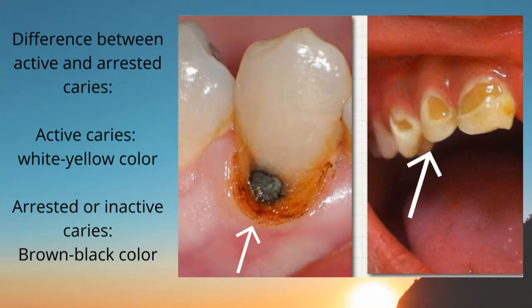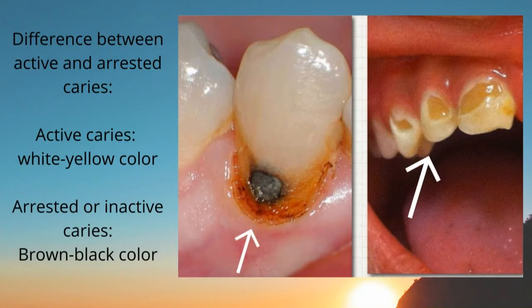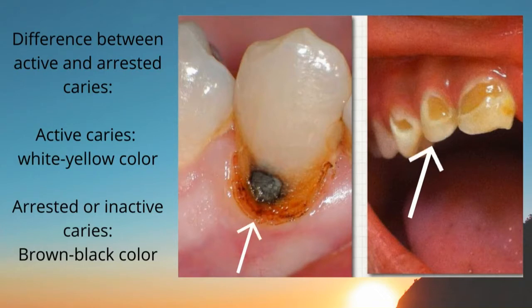The technique used until now for determining whether it is caries or not is visual-tactile together with radiograph. In order to differentiate, we can tell apart active and arrested caries by color only — for active caries it is white or yellow in color, whereas for arrested caries it is brown or black.